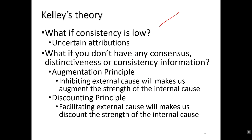You may have noticed that consistency is always high. What happens when it's low? That's a situation where your attributions are uncertain. Different psychologists explain what happens next: sometimes you will not make an attribution at all, or you may make an attribution to the specific situation rather than to the person, or to a combination of the person and the situation, or you may be intrigued and observe the situation further to resolve the consistency riddle. Also, what happens if you don't have any information — you need time and multiple observations to get consensus, distinctiveness, and consistency data?